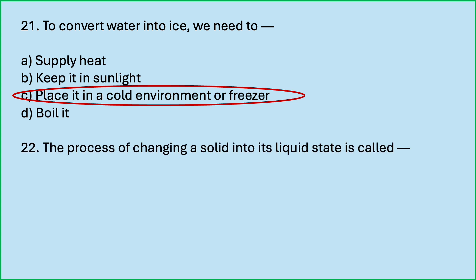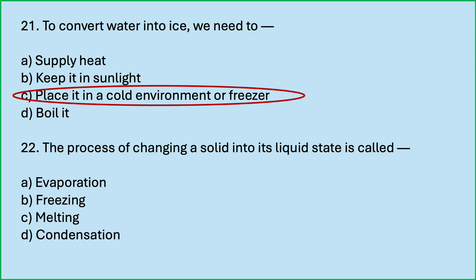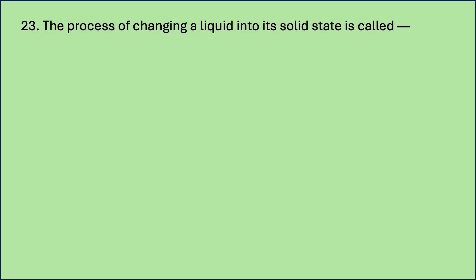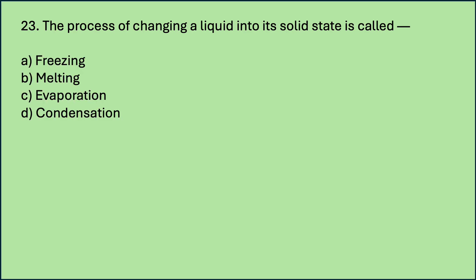The process of changing a solid into its liquid state is called — options are: evaporation, freezing, melting, condensation. Which is the correct answer? The process of changing a solid into its liquid state is called melting — for example, melting of ice. The process of changing a liquid into its solid state is called freezing.